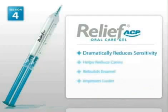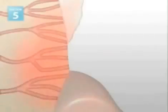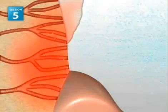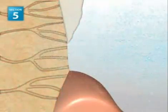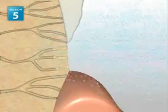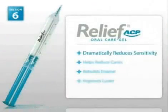Relief ACP helps alleviate pain both chemically and physically. Potassium nitrate acts as a chemical desensitizer, inhibiting the tooth pain receptors. Fluoride and ACP physically occlude dentinal tubules, and by combining both fluoride and ACP, tubules are occluded much more quickly than with fluoride alone.